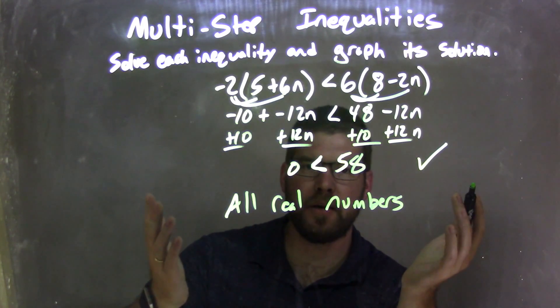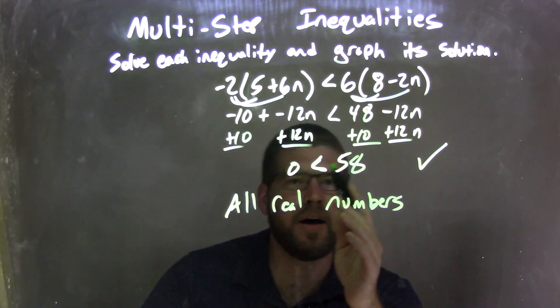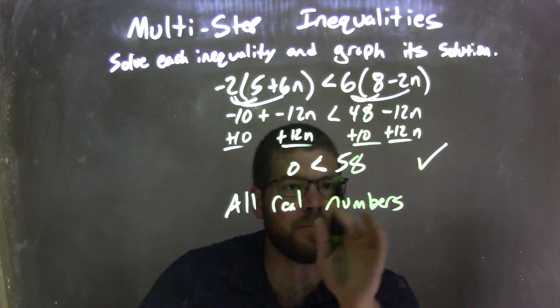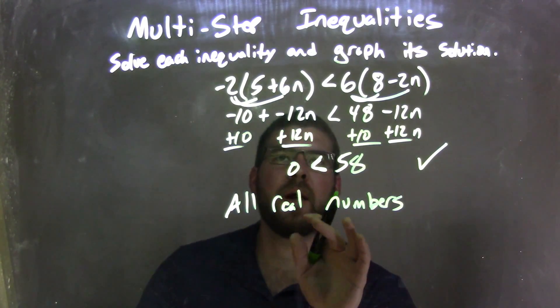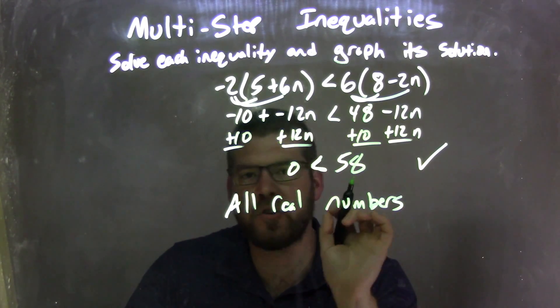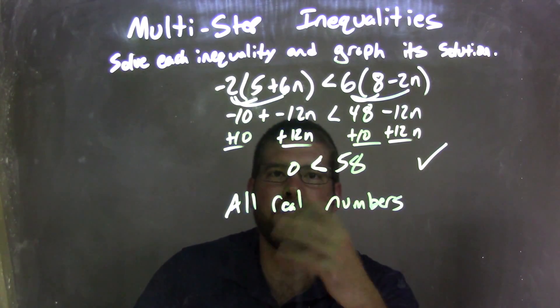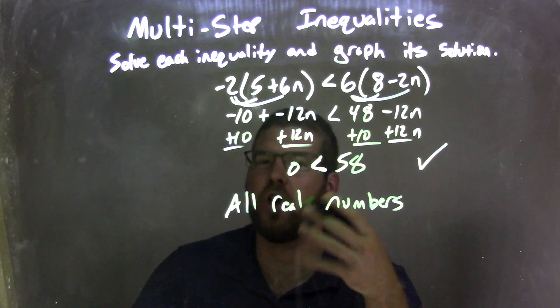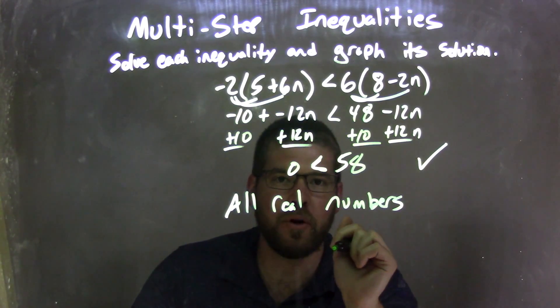There is no variable left here, so it's just a number is less than another number. It's a true statement, meaning all real numbers, meaning that we can plug any number we want for n and it will be a true statement. It can be 5, 15, negative 30. Who knows? Who cares? All real numbers have worked.